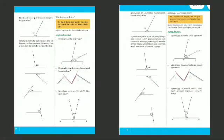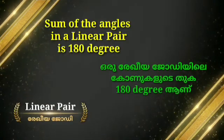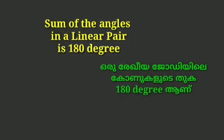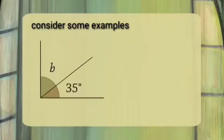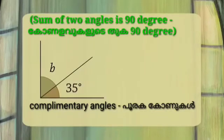To find the measure of the other angle, we need to subtract the given measure from 180 degrees. We need to subtract the given measure from 90 degrees.